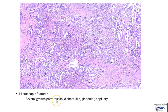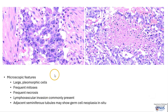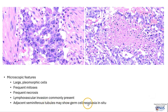Microscopically, as we saw, there are several growth patterns: solid sheet-like areas, glandular areas, and also papillary areas, with lots of areas of necrosis. The cells are very pleomorphic — they are large, the nuclei contain prominent nucleoli, and there are frequent mitotic figures. We can see two mitotic figures here, and very often we will see areas of necrosis. Lymphovascular invasion is commonly present in this tumor, and also any adjacent seminiferous tubules in the testis may sometimes show germ cell neoplasia in situ.